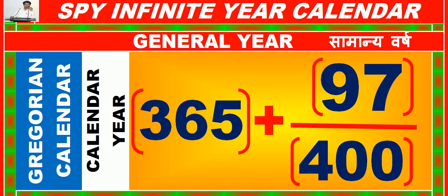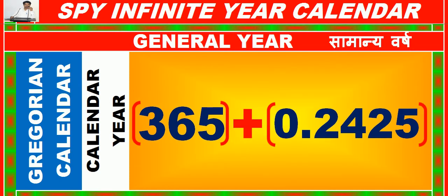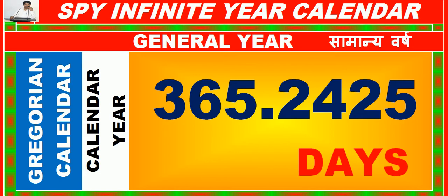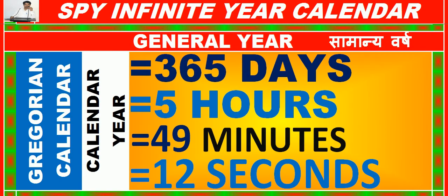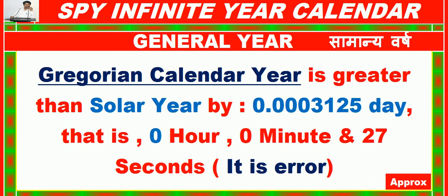Average Gregorian Calendar year = 365 + 97/400 = 365.2425 days = 365 days, 5 hours, 49 minutes, and 12 seconds. The Gregorian Calendar year is greater than the solar year by 0.0003125 day, that is 27 seconds (this is the error).